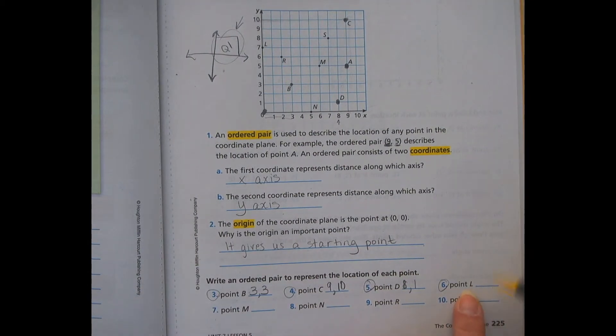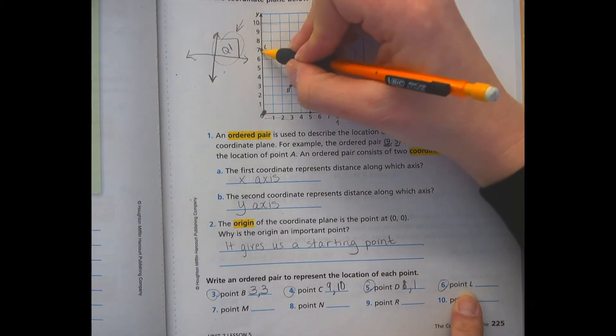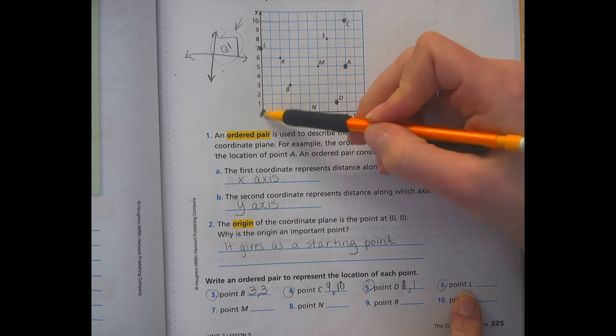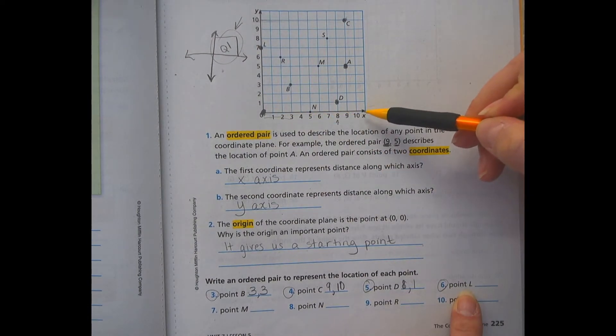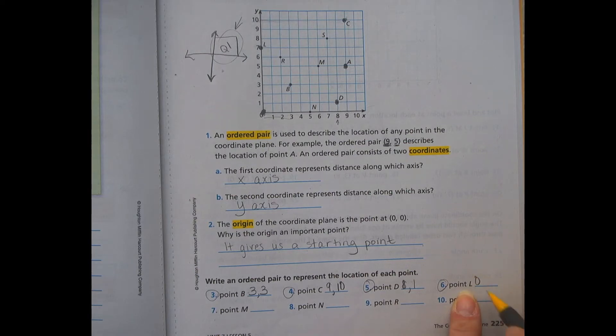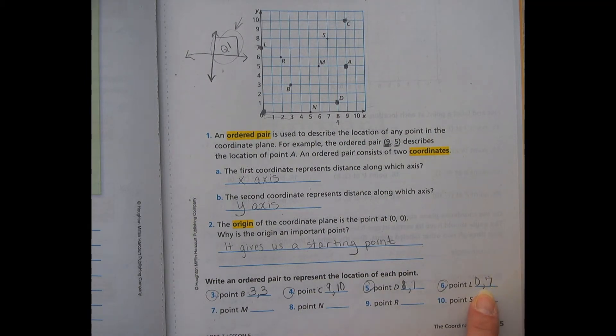And then point L, where are you? Ah, it's on the y-axis. Okay, so look at this one. This one's a little trickier. Does it actually go anywhere on the x-axis? It doesn't. So my x is zero. I didn't go anywhere. So my y is L, is seven. So (0, 7).